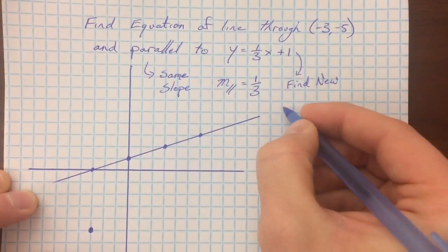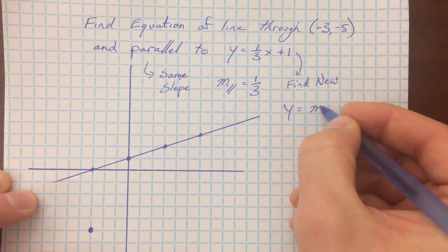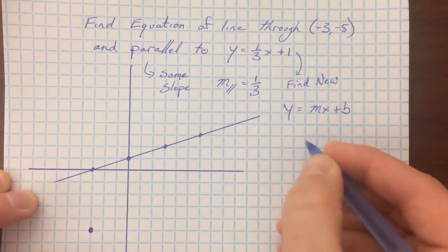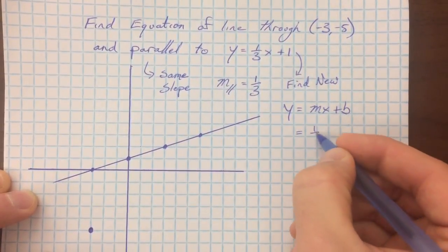And so what we're going to do is I'm just going to use y equals mx plus b and say, okay, I know that the slope is still going to be 1/3.